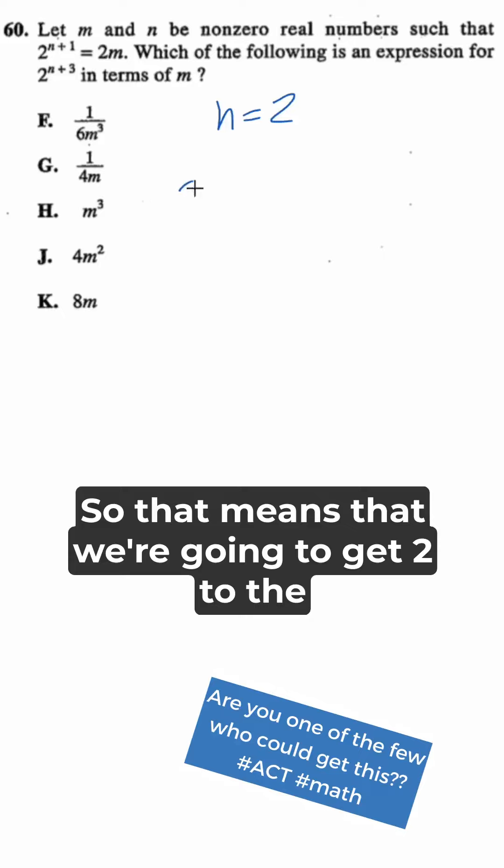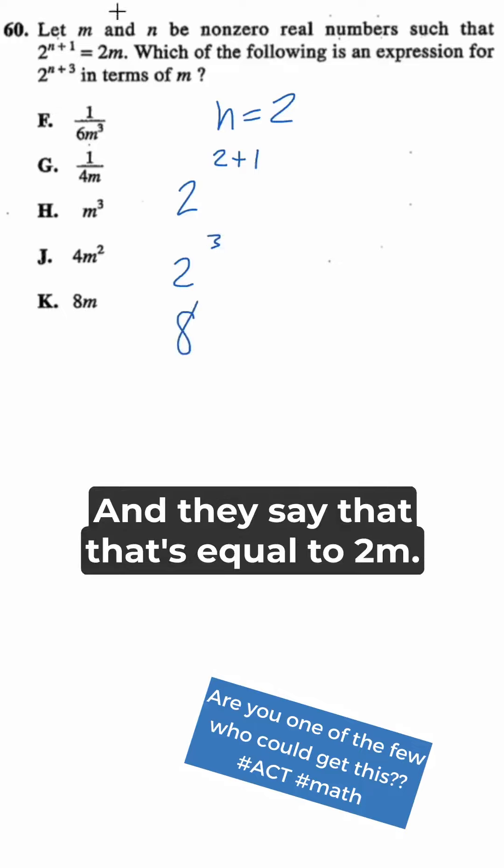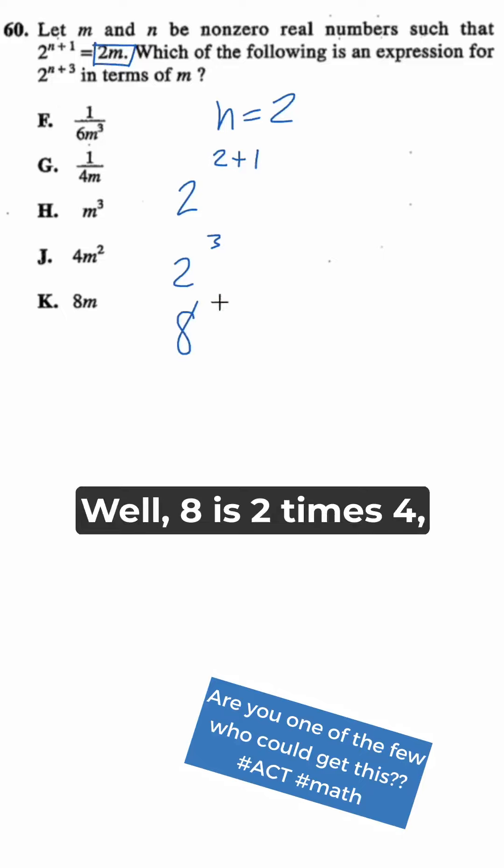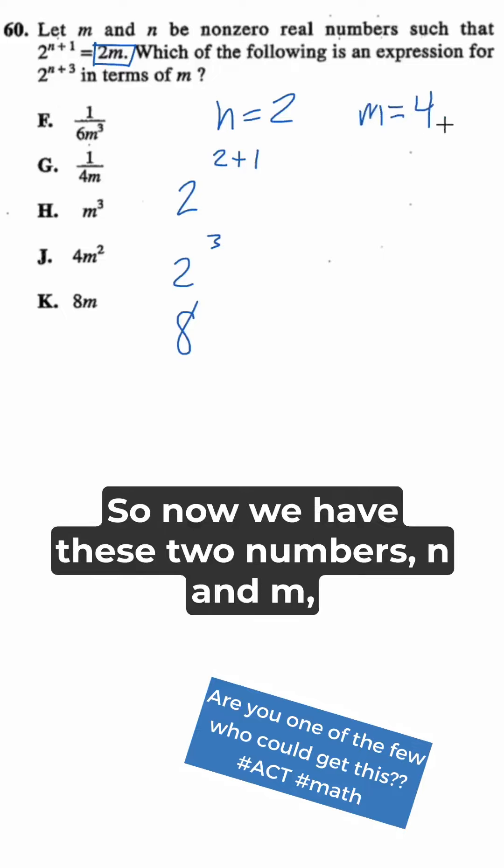So that means we're going to get 2 to the 2 plus 1, which is really 2 to the 3rd, which is 8. And they say that that's equal to 2 times m. Well, 8 is 2 times 4, so that means that m would have to be 4. So now we have these two numbers, n and m.